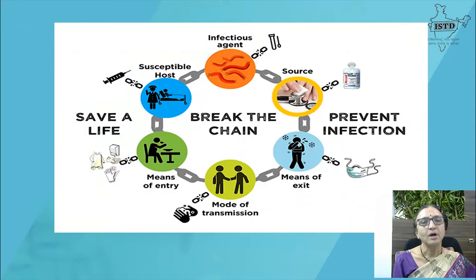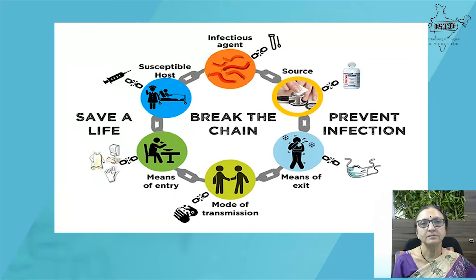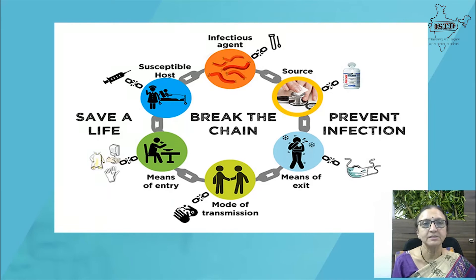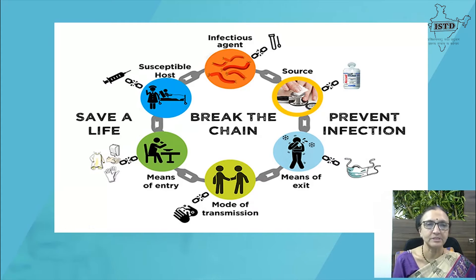To break the chain of infection: the source of infection and contaminated surfaces should be cleaned with disinfectant. Since organisms spread through coughing or sneezing, using a mask is the way to break that chain. Since the mode of transmission includes shaking hands, hand washing is a must to prevent infection.